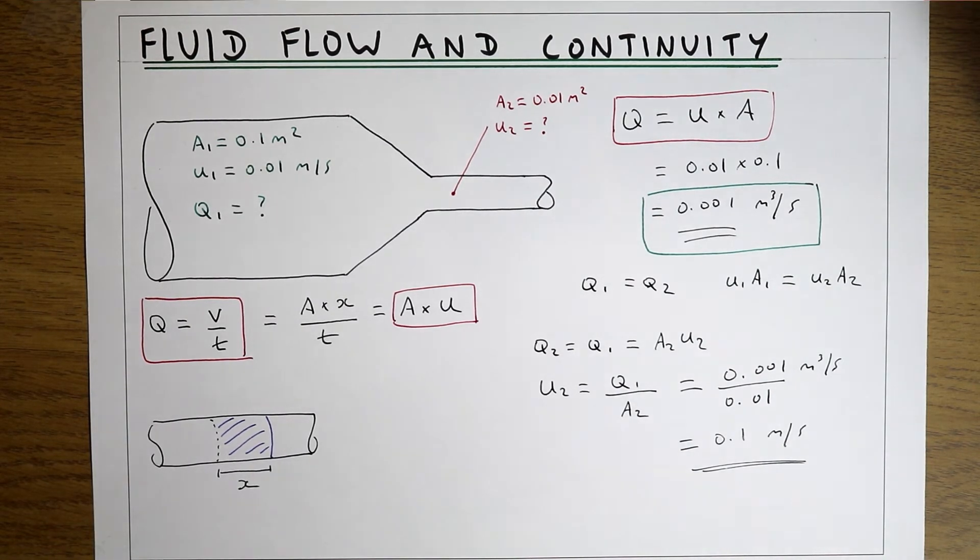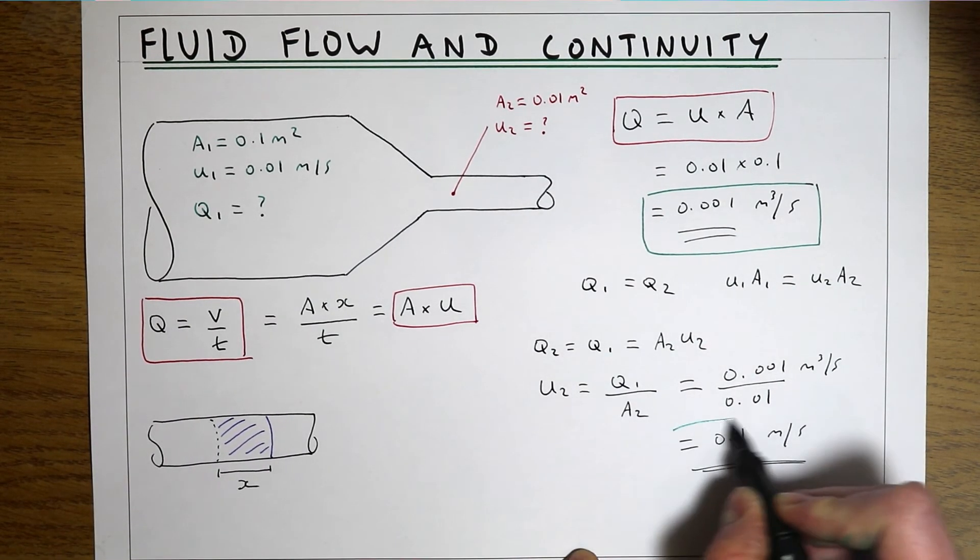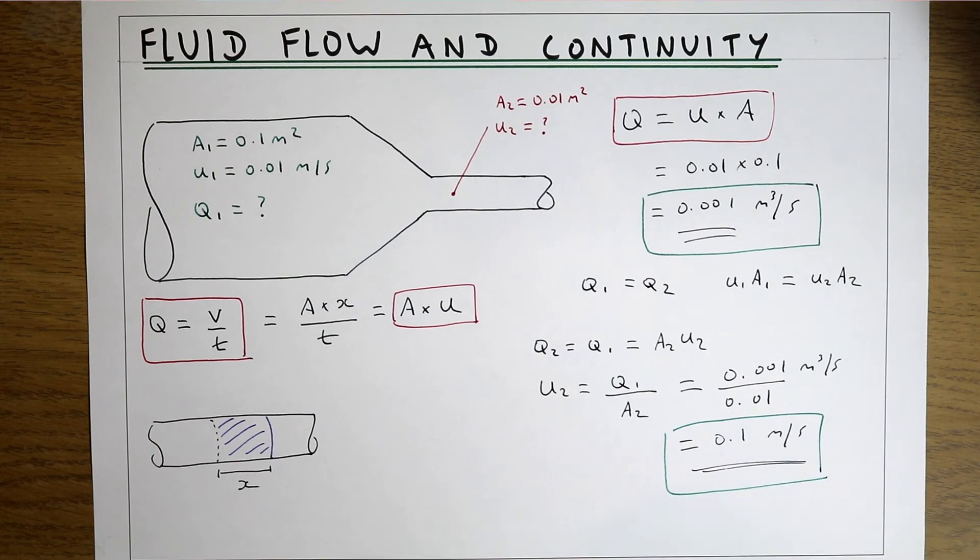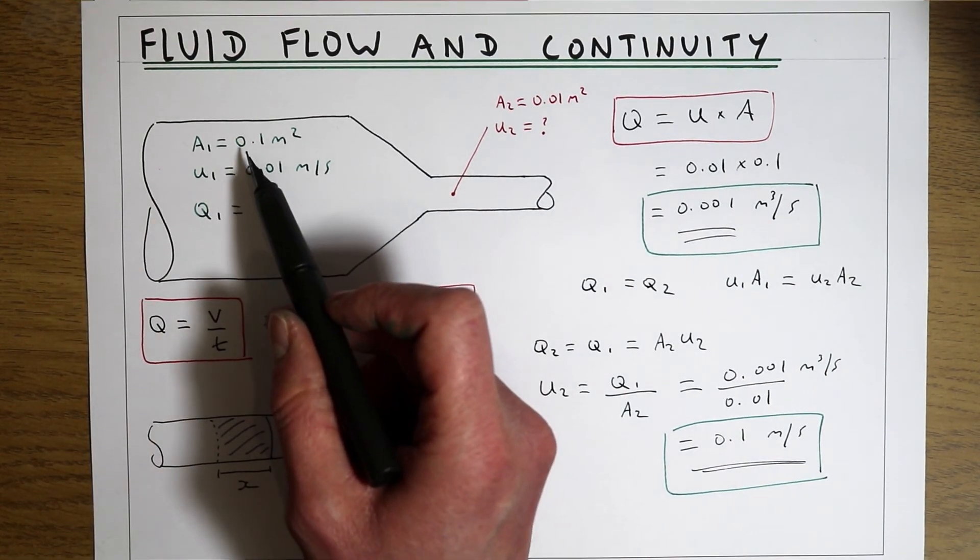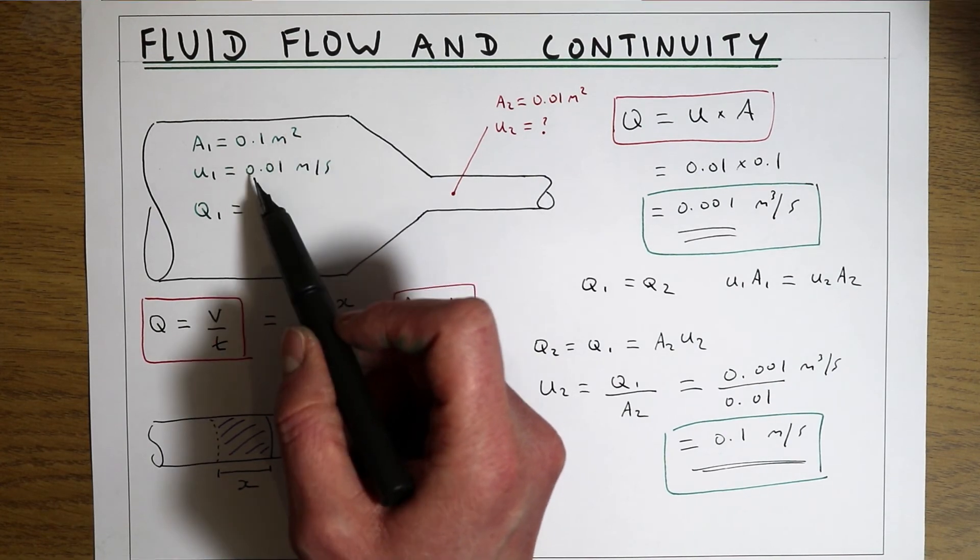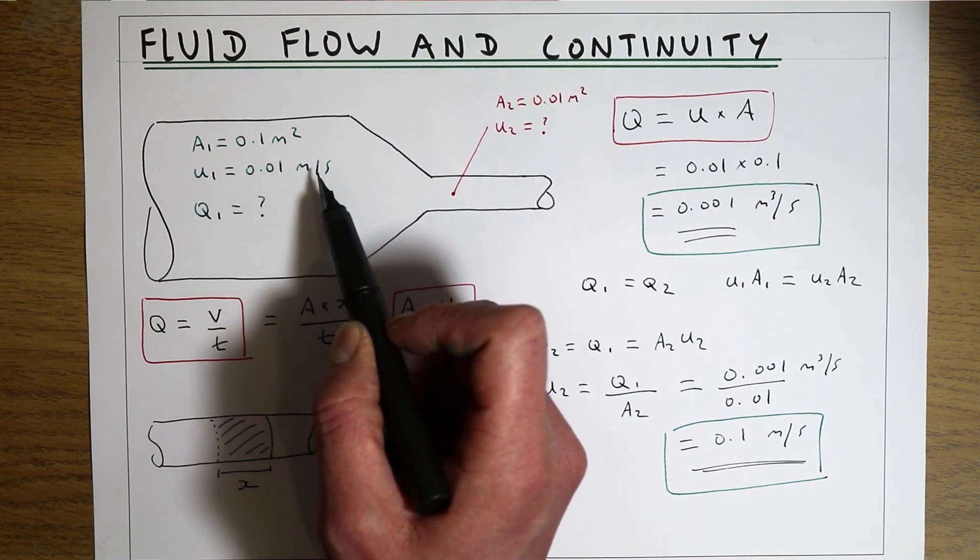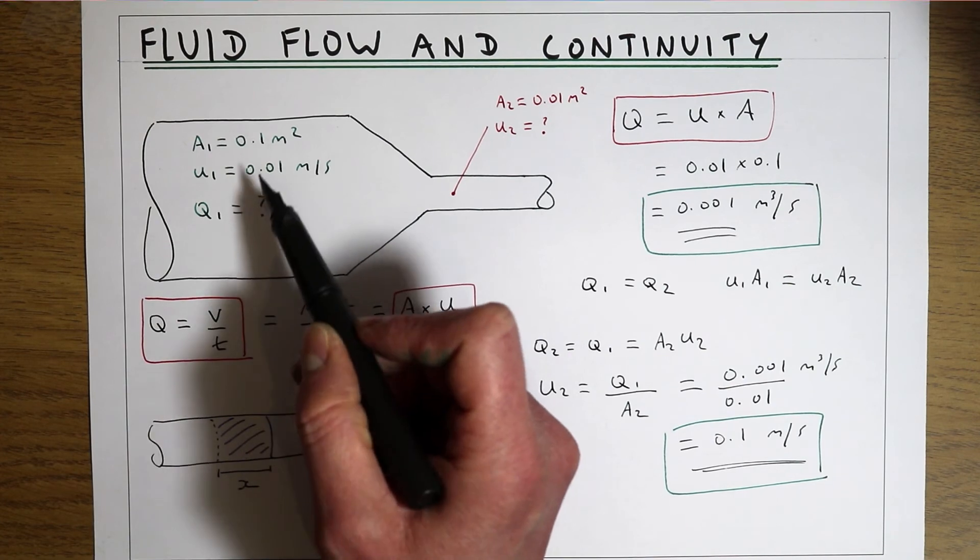This also gives us quite a nice representation of what we mean by continuity. At the first point in this system our area is 0.1 m² and our velocity is 0.01 m/s, so we've got a large area and a small velocity.